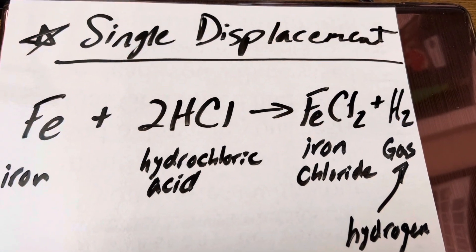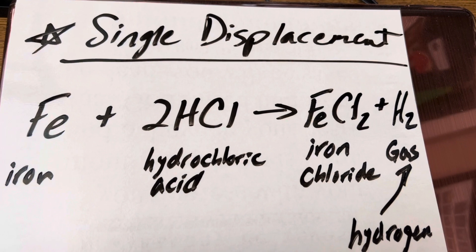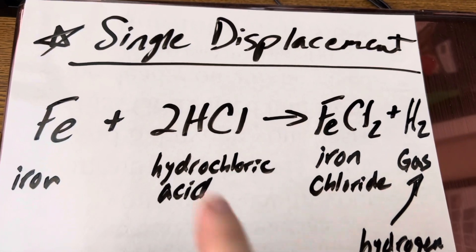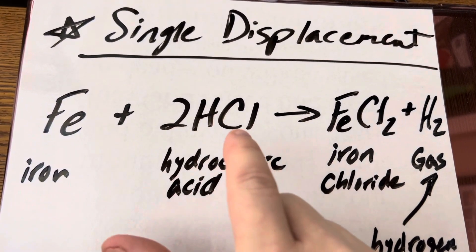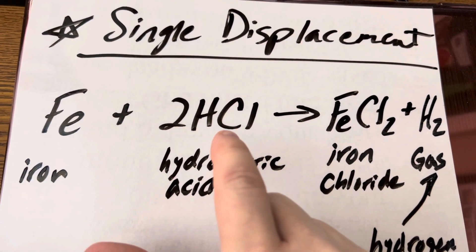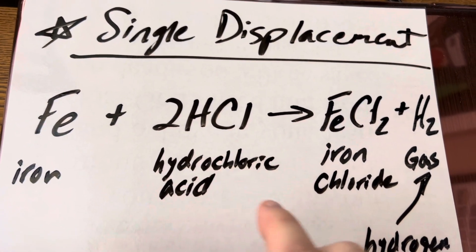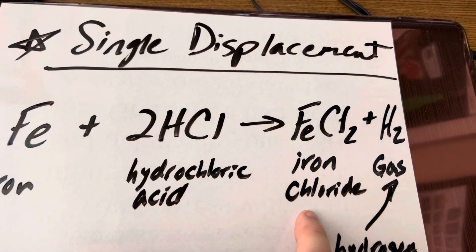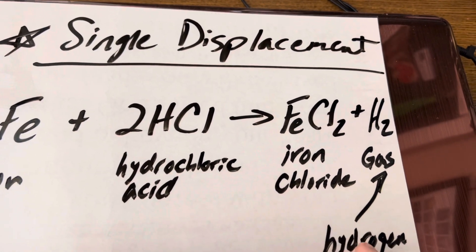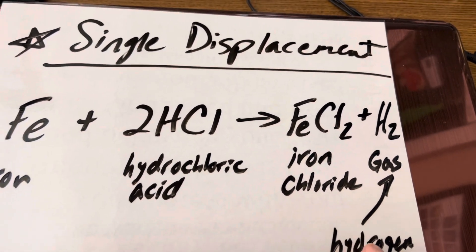So what's happening here is a single displacement reaction. You have iron plus your hydrochloric acid, HCl, and the product is iron chloride and of course hydrogen gas.